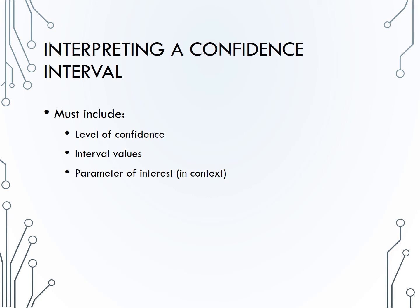When interpreting a confidence interval, you must include the level of confidence, 90, 95, 99 percent. The actual value of the interval that you created, the lower and upper end points. And what is a confidence interval used to estimate? We're trying to estimate the parameter of interest, so what that parameter is, in words, should be included as well.